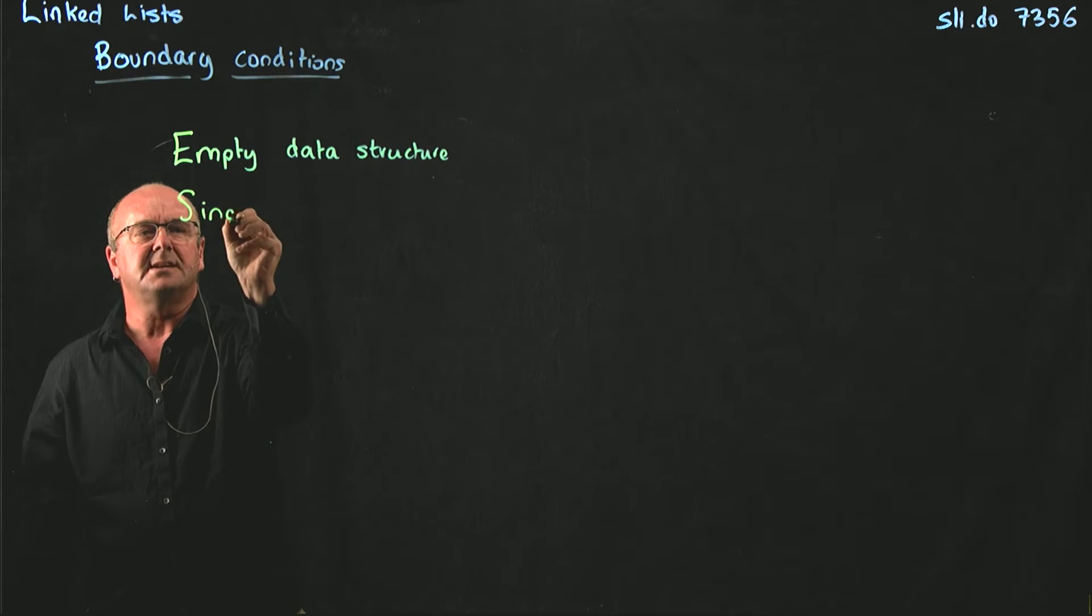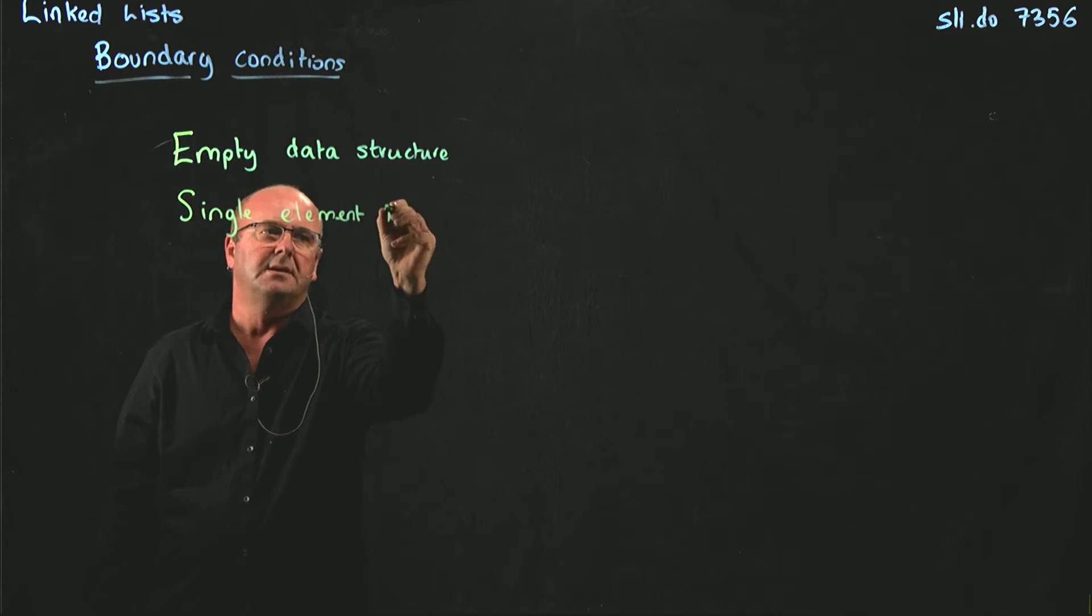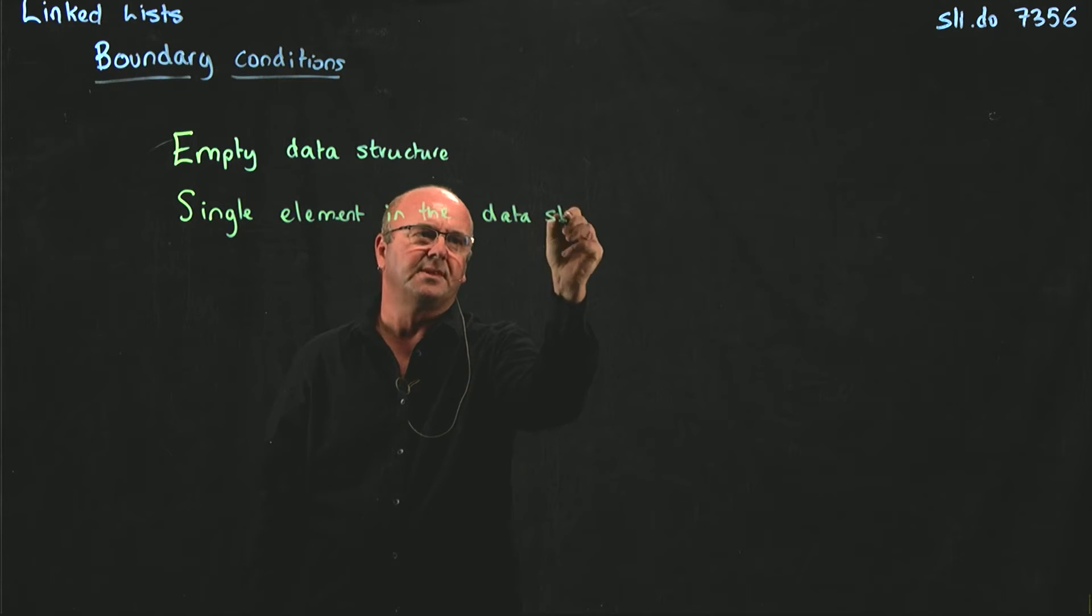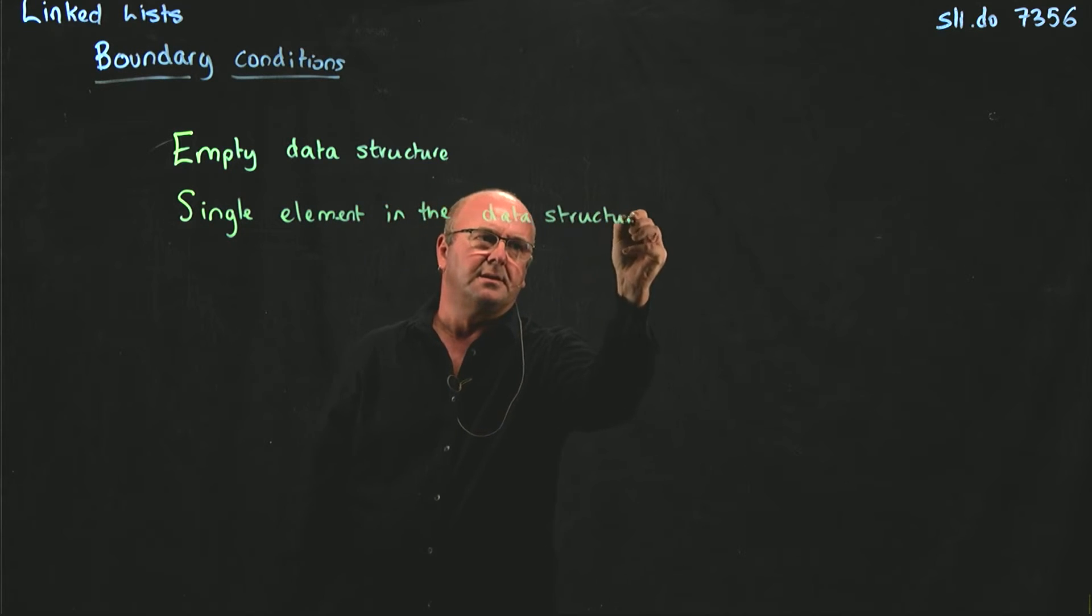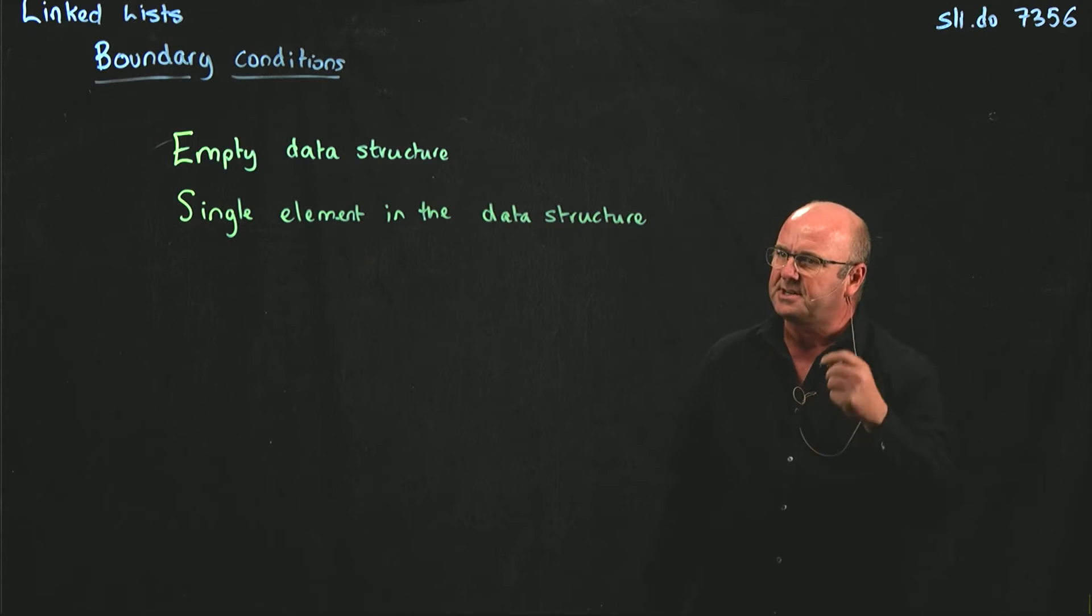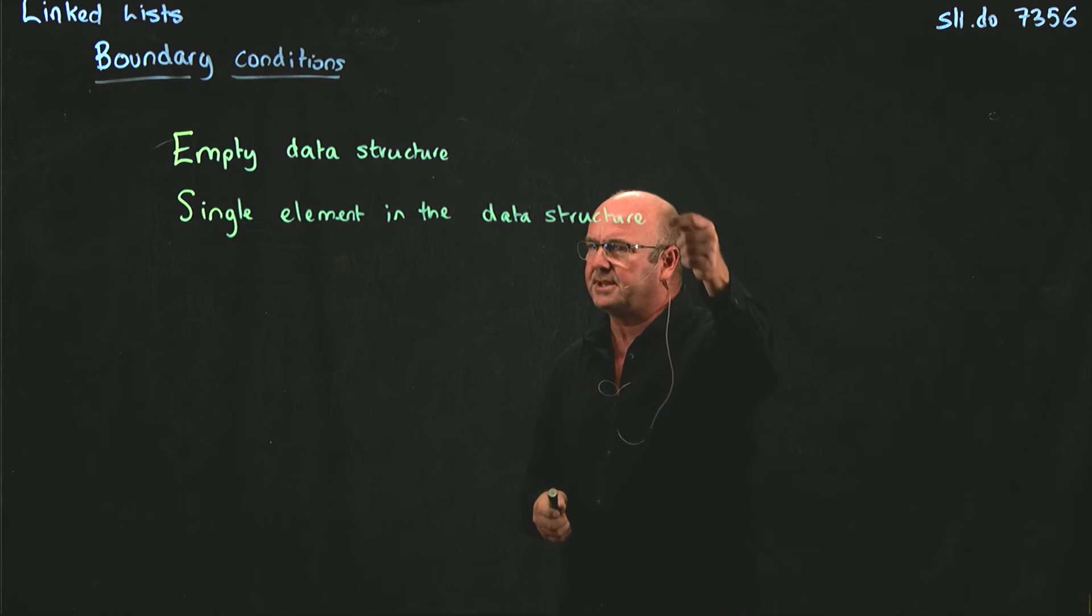What if there's a single element in the data structure? If I'm adding something to a data structure that has just one element in it, how does that change what I'm going to do? If I'm removing something and I've only got one element, that means I'm going to go to an empty list. So now I have to worry about both of these.